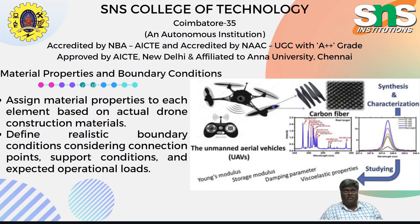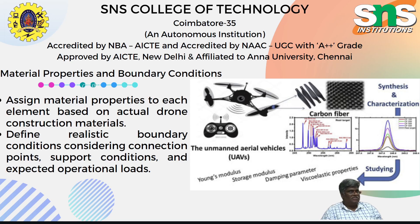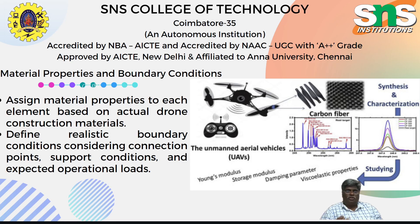The next step is to define material properties and boundary conditions. Unmanned air vehicles use carbon fiber and glass-reinforced materials. Define the material properties: Young's modulus, modulus of elasticity, damping parameter, and viscoelastic properties. Assign suitable material properties to each element based on the actual material used in drone construction. Define boundary conditions including constraints at connection points, support conditions, and external loads or forces the drone might experience during operation. A key component is the propeller, which typically rotates at 4,000 to 7,000 RPM based on payload capacity.